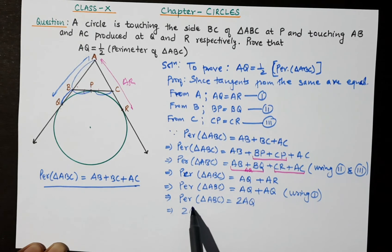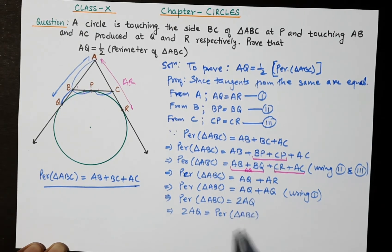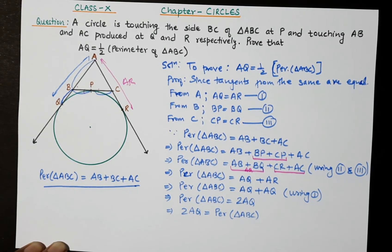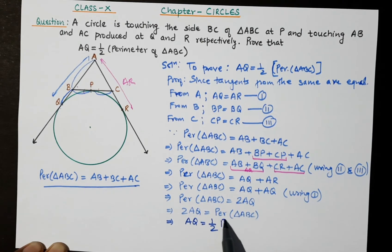Now using equation 1, AQ equals AR. So we substitute AR with AQ: the perimeter of triangle ABC equals AQ plus AQ, which is 2AQ. Therefore, AQ equals half the perimeter of triangle ABC.